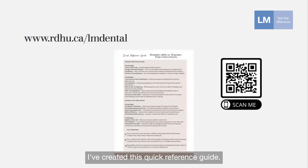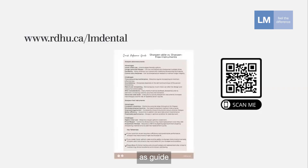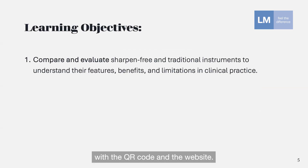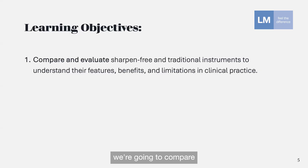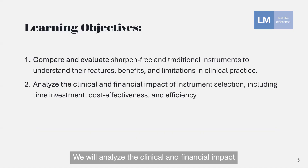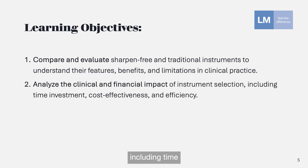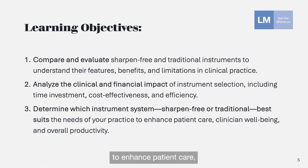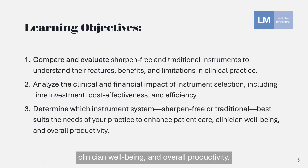I've created a quick reference guide you can print and post in your operatory as a reminder when evaluating your instrumentation needs. I'll share that slide again at the end with the QR code and the website. Today's learning objectives are: compare and evaluate sharpen-free and traditional instruments to understand their features, benefits, and limitations; analyze the clinical and financial impact of instrument selection including time investment, cost-effectiveness, and efficiency; and determine which instrument system best suits the needs of your practice to enhance patient care, clinician well-being, and overall productivity.